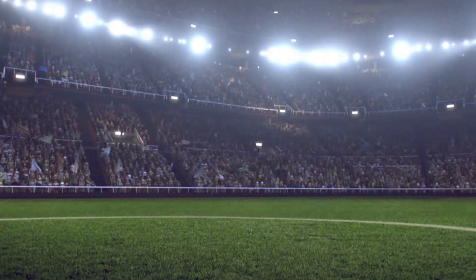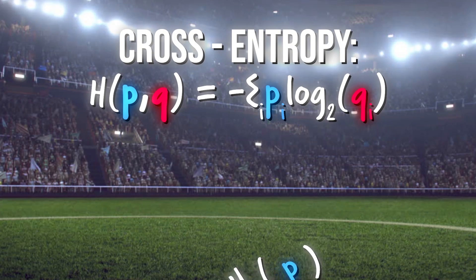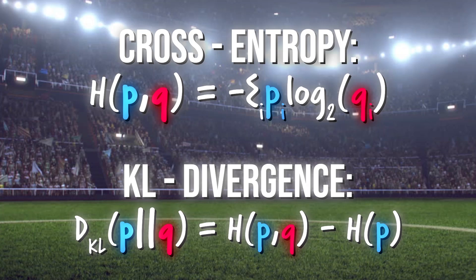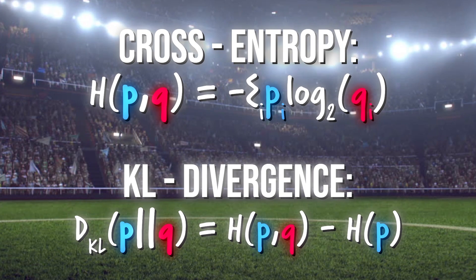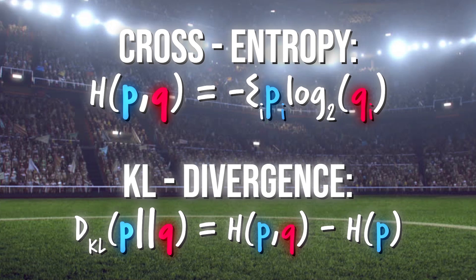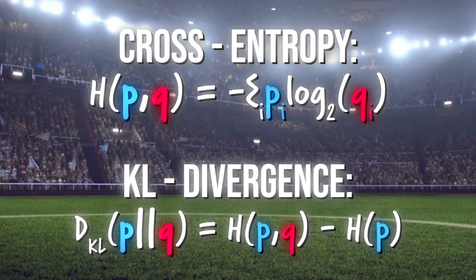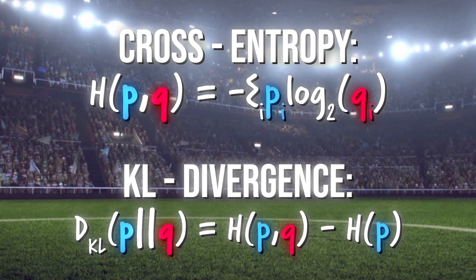The cross entropy is the average message length. We can express this as a function of both the true probability distribution p and the predicted distribution q. If our prediction is perfect, then the cross entropy is equal to the entropy. But if the distributions differ, then the cross entropy will be greater than the entropy by some number of bits.